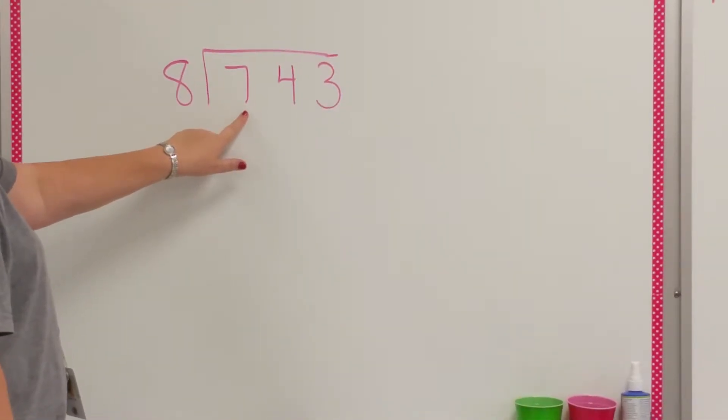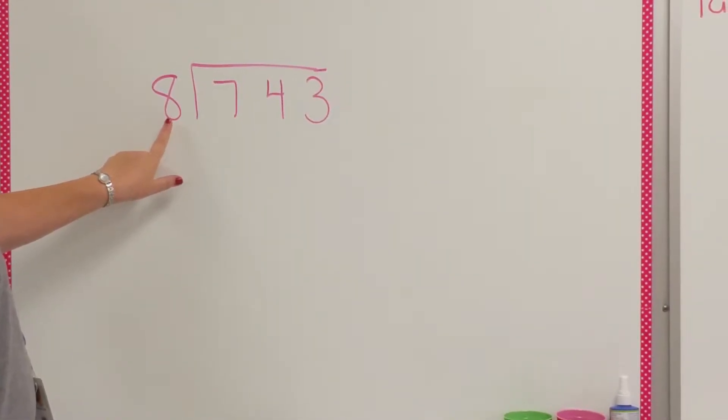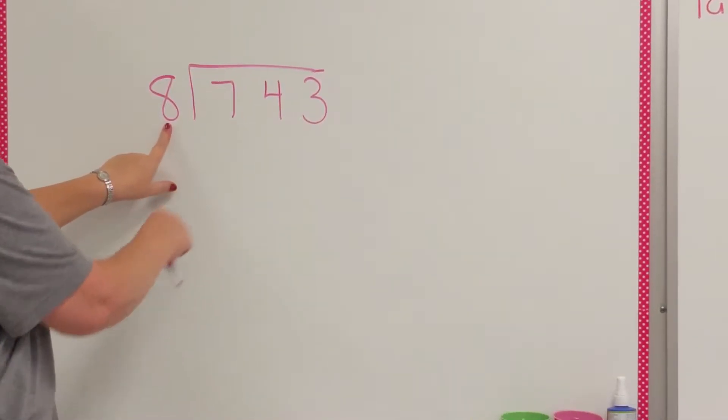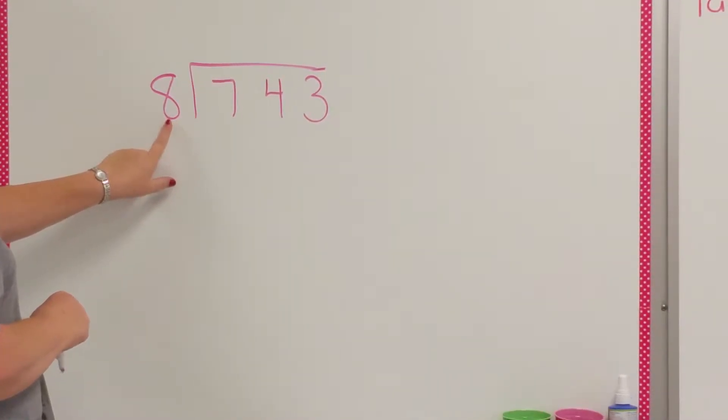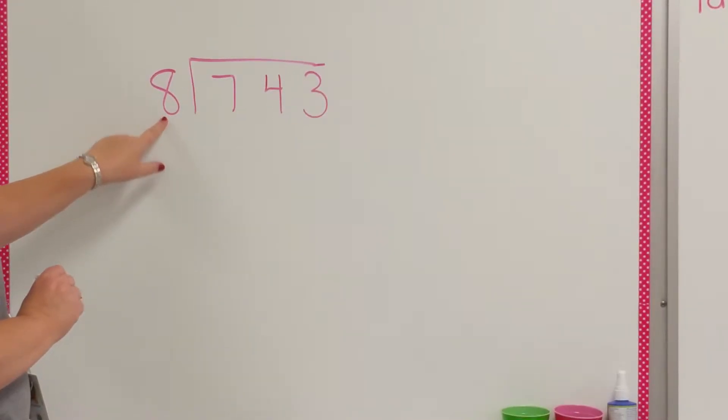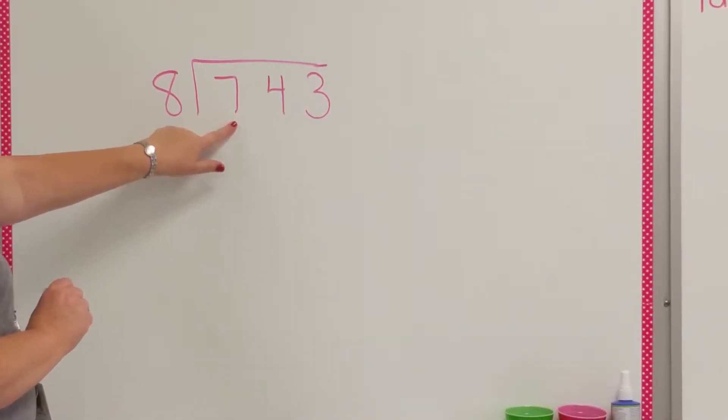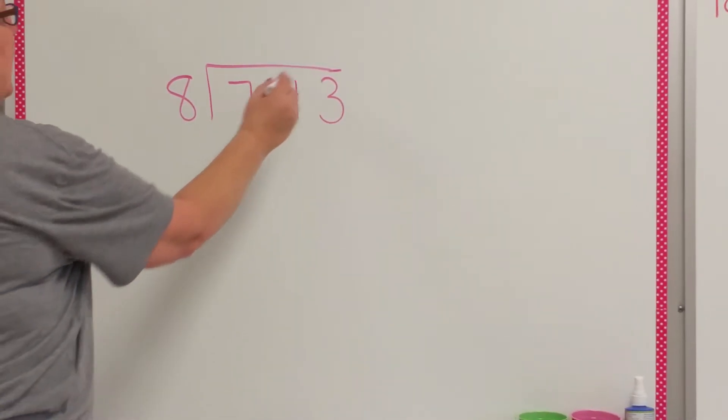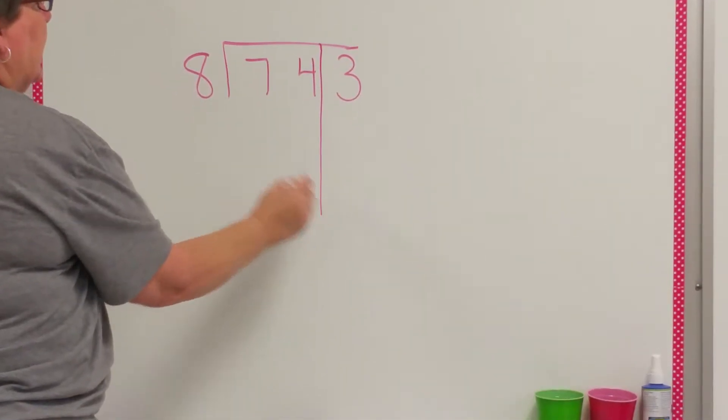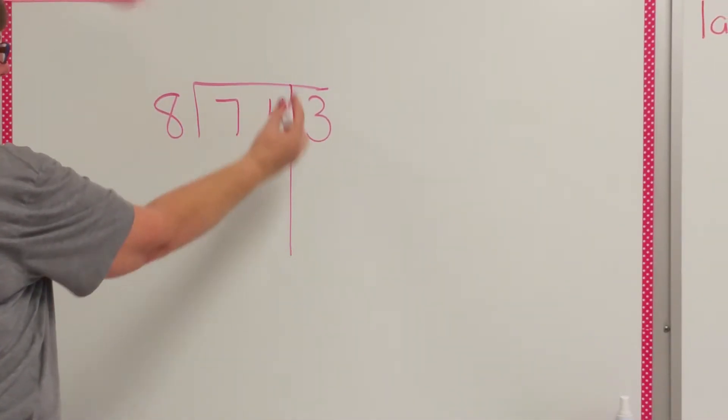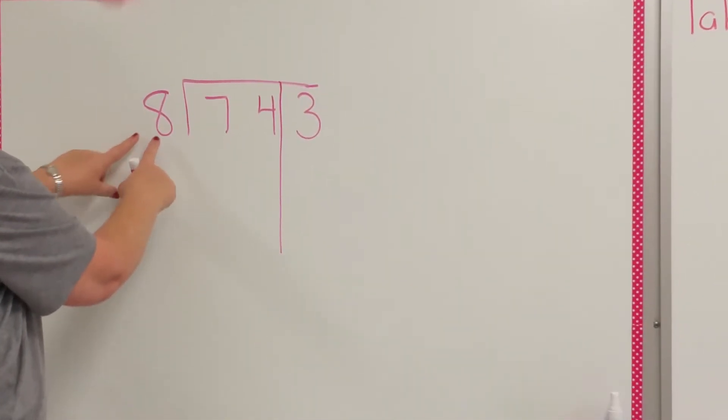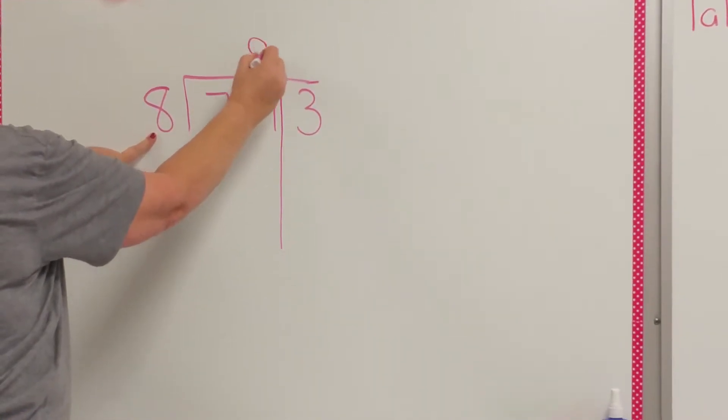Because 8 is larger than 7, we ask ourselves how many times will 8 divide into 74, or another way to say it is 8 times what gets as close to 74 without going over. Because we're just looking at 74, we're going to draw the line down. 8 times 9 is 72.